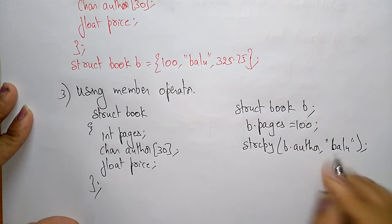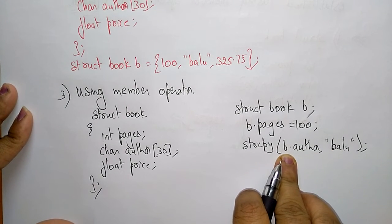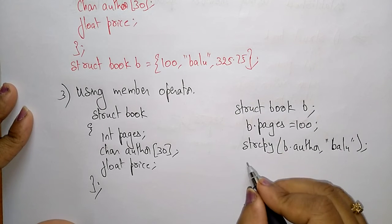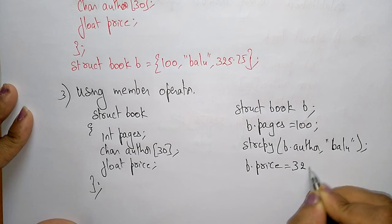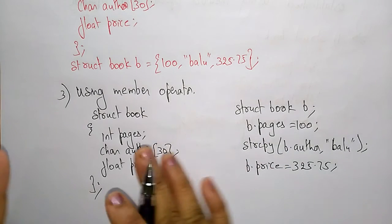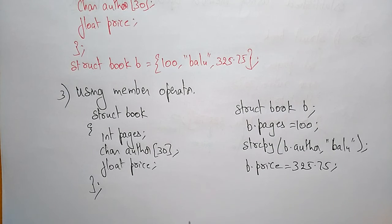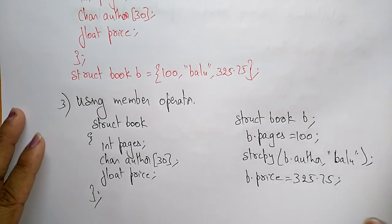So the value will copy to the B.author, and B.price = 325.75. This is another way of initializing the structure.